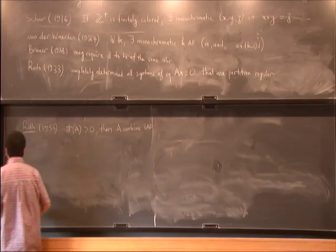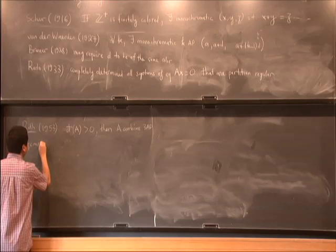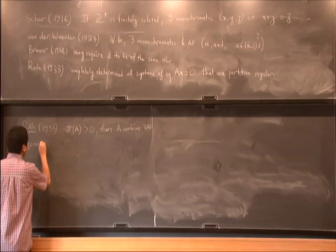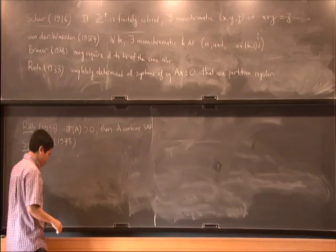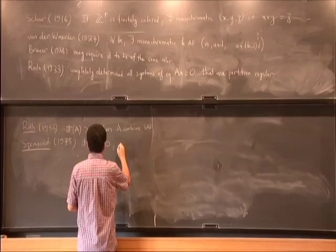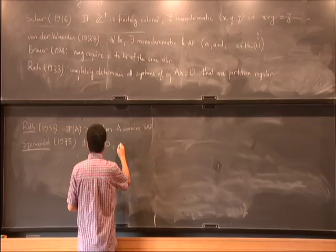And similarly, Szemerédi's theorem is the generalization of Roth's theorem for longer arithmetic progressions. But it's much more difficult. It says that if we have a positive density, then this set must contain arithmetic progressions of length K for every K.